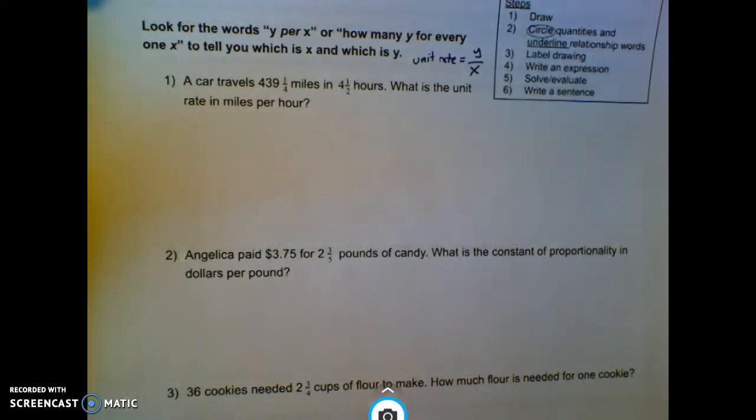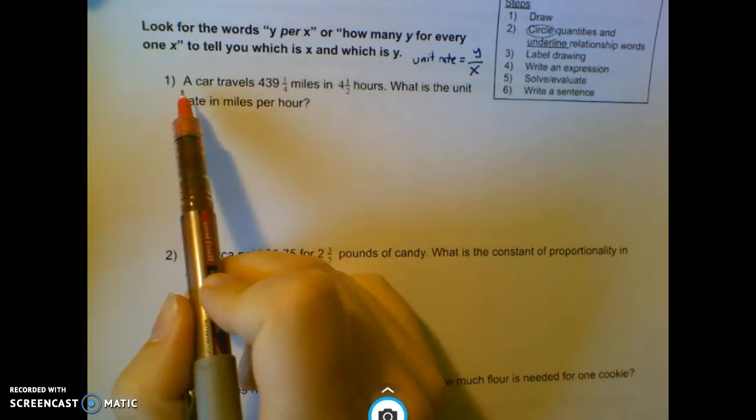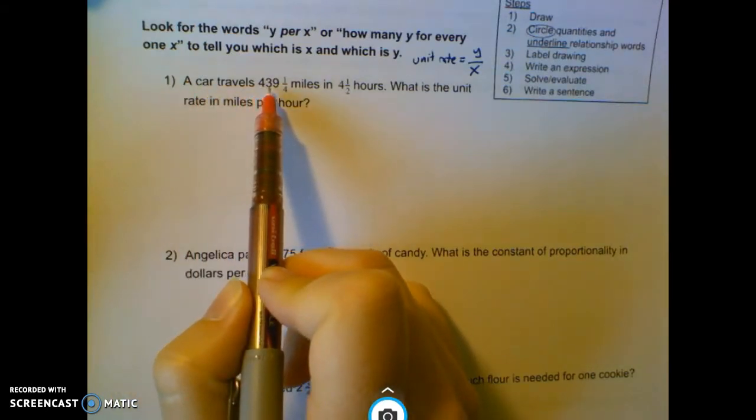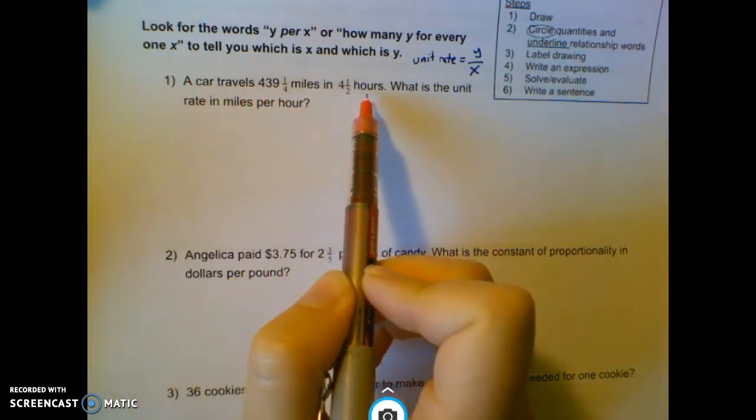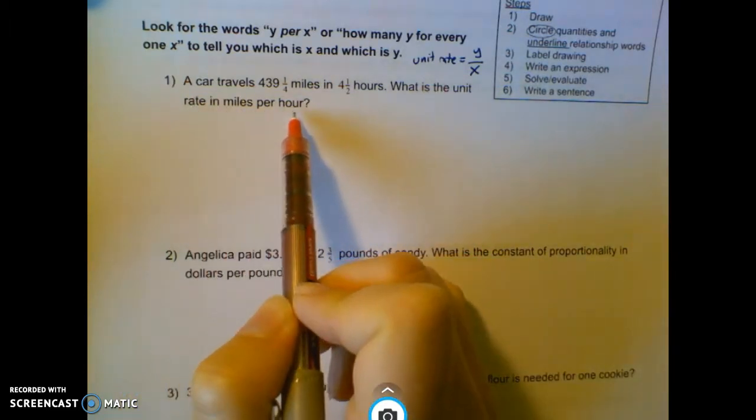So whenever we start off, we're going to say, OK, a car travels 439.25 miles in 4.5 hours. What is the unit rate in miles per hour?